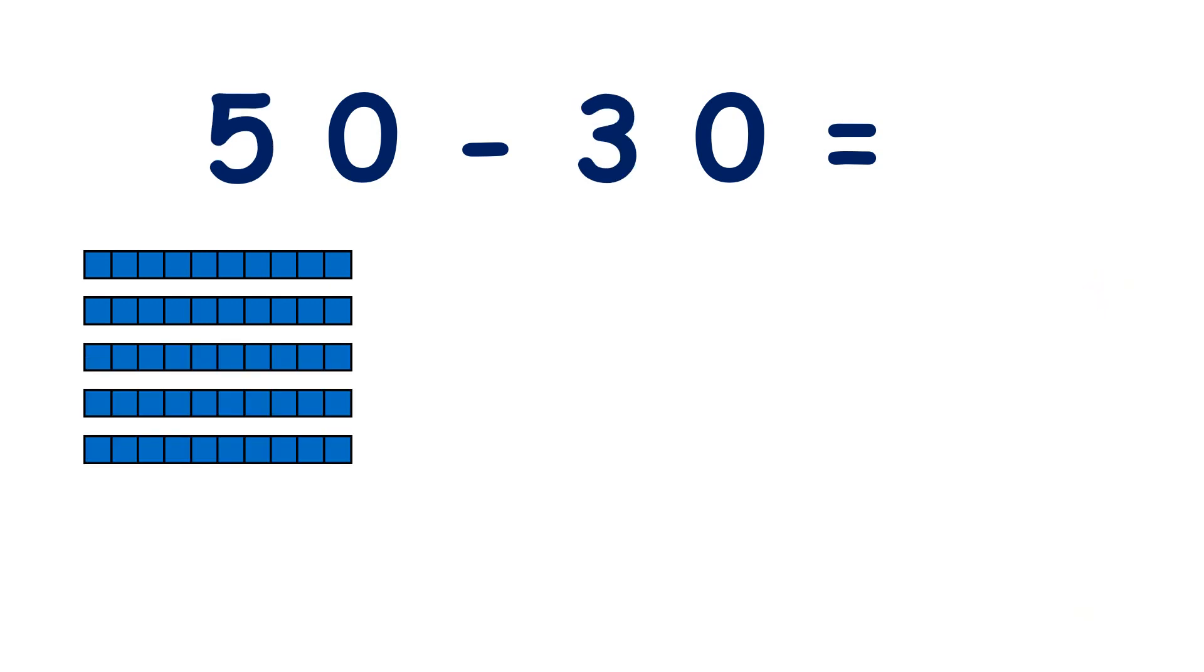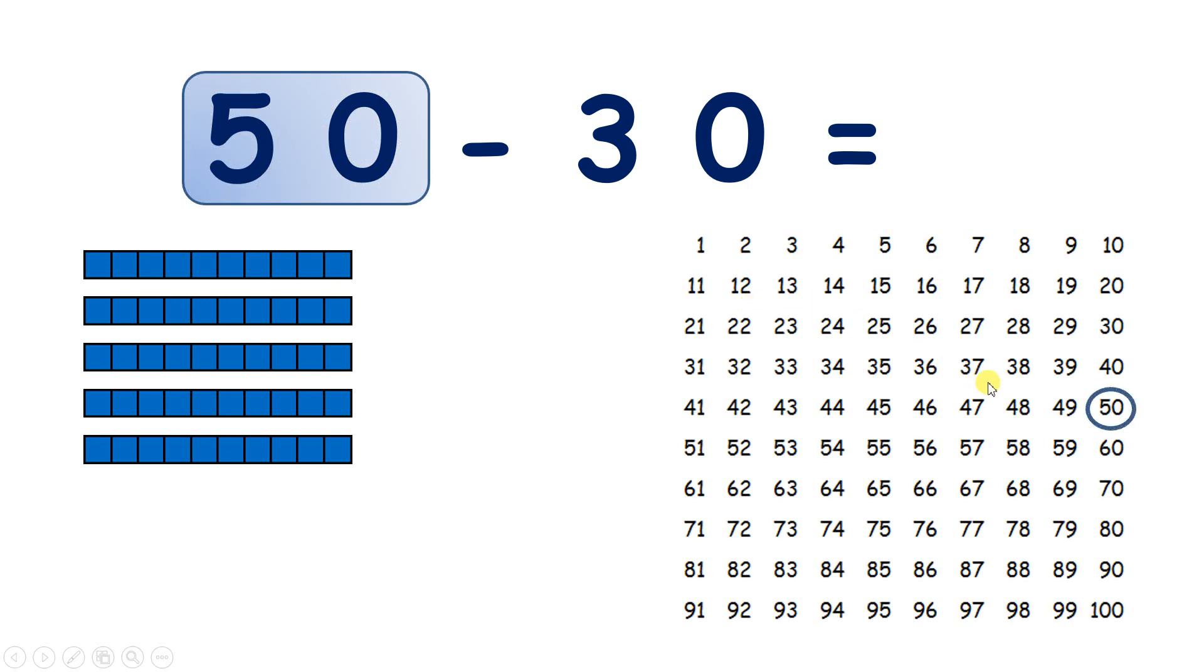Now 50 take away 30, so we have five tens. Let's find 50 on our 100 square, and we're subtracting 30, so we need to take away three tens. So take away 10, and we have 40.